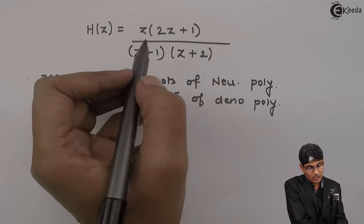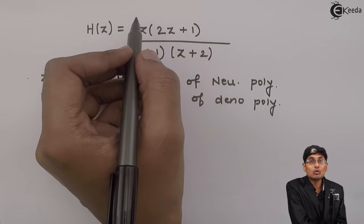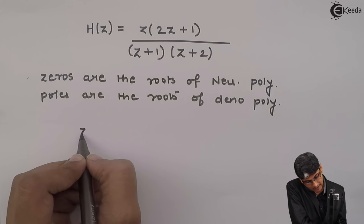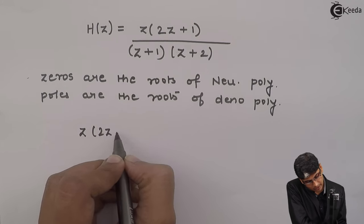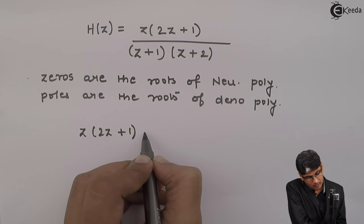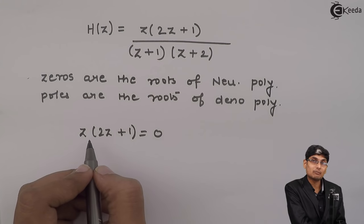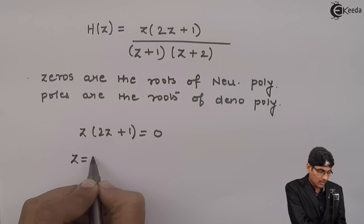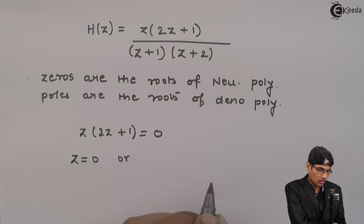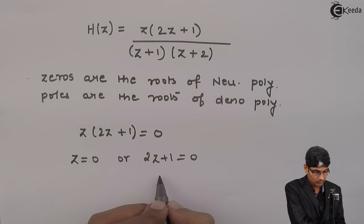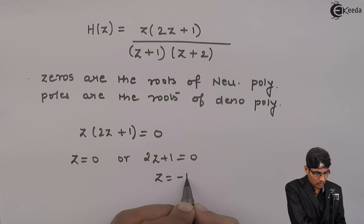How to get roots? Equate the numerator to 0. When I equate the numerator to 0, I get z(2z+1) = 0. This product goes to 0 only if z = 0 or 2z+1 = 0, which means z = -1/2.